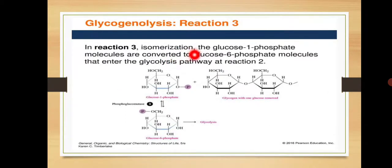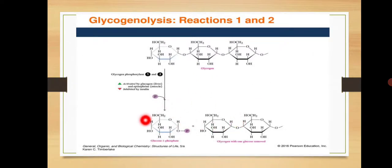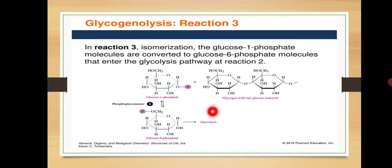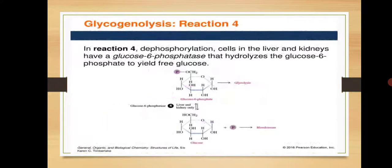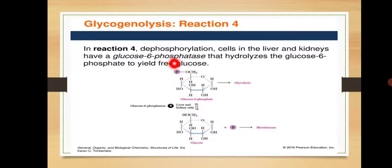In reaction 3 — isomerization — glucose-1-phosphate is converted into glucose-6-phosphate by the enzyme phosphoglucomutase. Glucose-6-phosphate enters the glycolysis pathway at reaction 2, as it is also an intermediate product of glycolysis. In reaction 4 — dephosphorylation — cells in the liver and kidneys have glucose-6-phosphatase, which hydrolyzes glucose-6-phosphate to yield a free glucose molecule by removing the phosphate from the sixth position, ready to be used as energy.